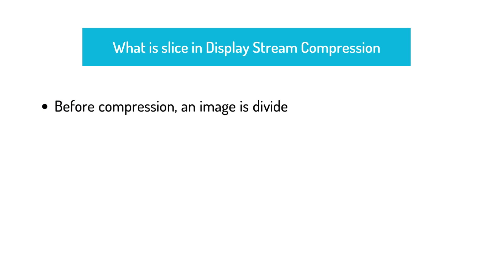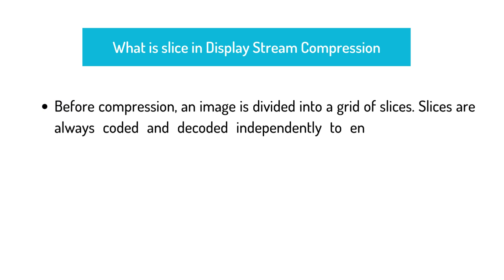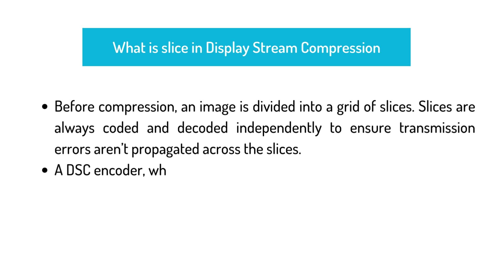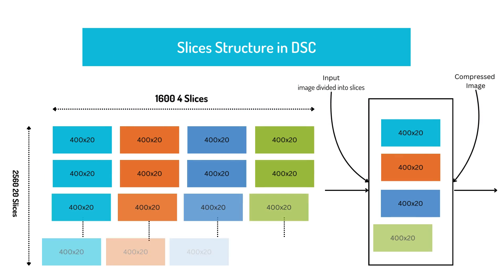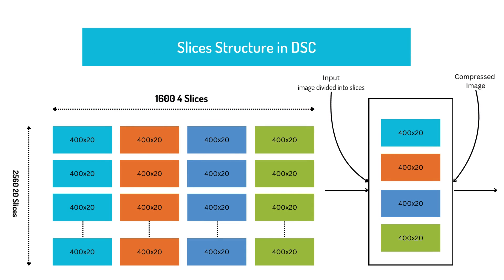What is a Slice in Display Stream Compression? Before compression, an image is divided into a grid of slices. Slices are always coded and decoded independently to ensure transmission errors aren't propagated across slices. A DSC encoder, which can be made up of multiple cores that operate in parallel, applies compression to each slice independently.